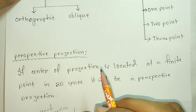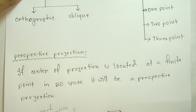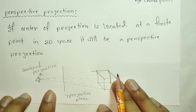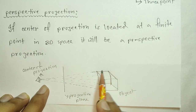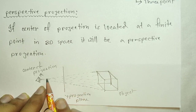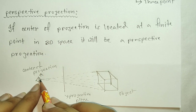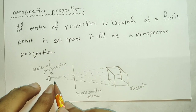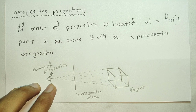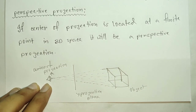If the center of projection is located at a finite point in 3D space, it will be a perspective projection. The object is located relative to the projection plane, and the lines are the projectors. This center of projection — if located at a finite point — results in perspective projection.